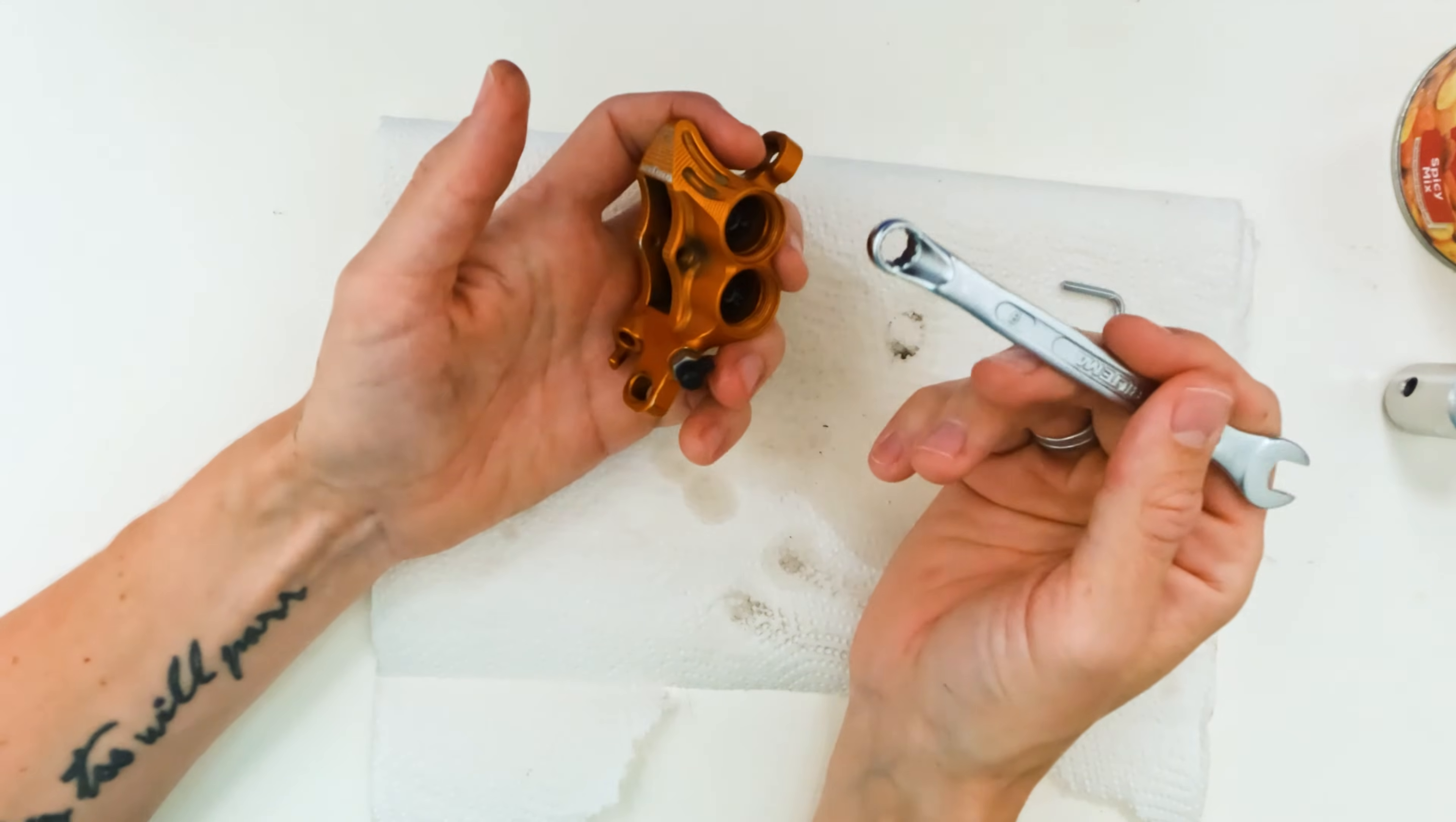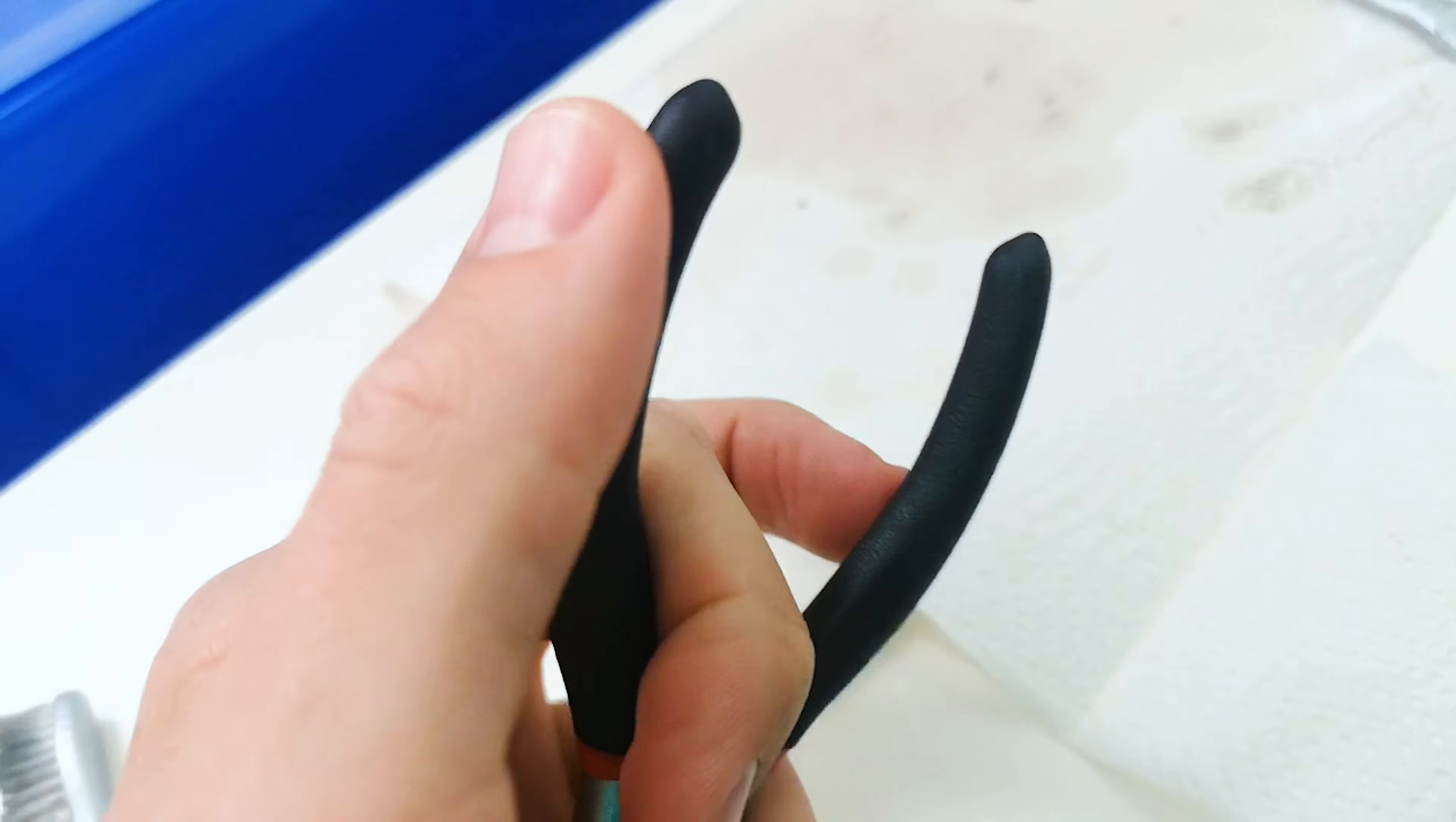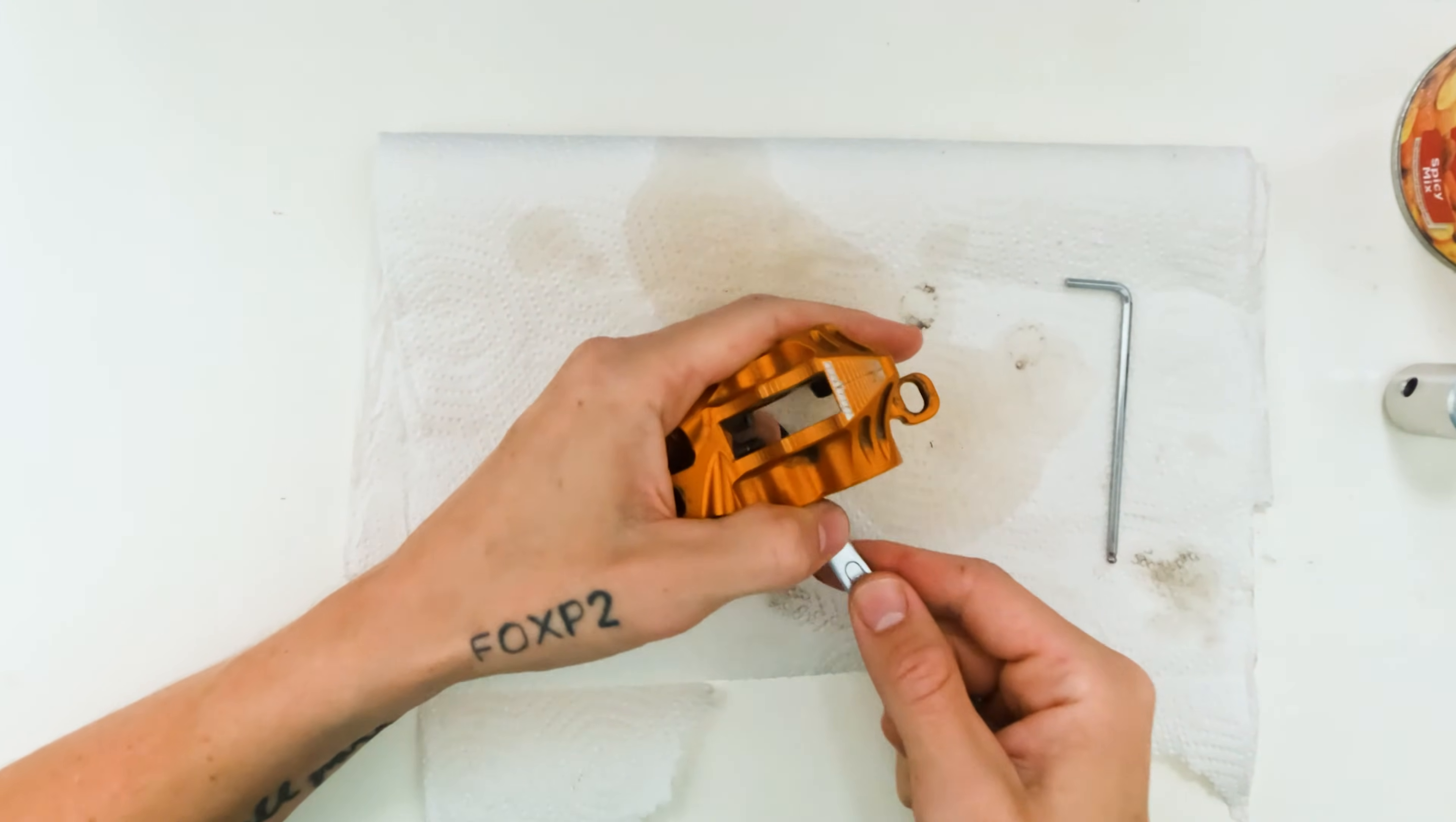Now we can just pop that sucker out. And I mean, just be careful when you do this. You don't want to hurt the inside of the caliper or scratch it in any way. Pro tip: if you're super careful about your calipers, use something with a rubber coating. Pushing them in that direction into the caliper. There we go.